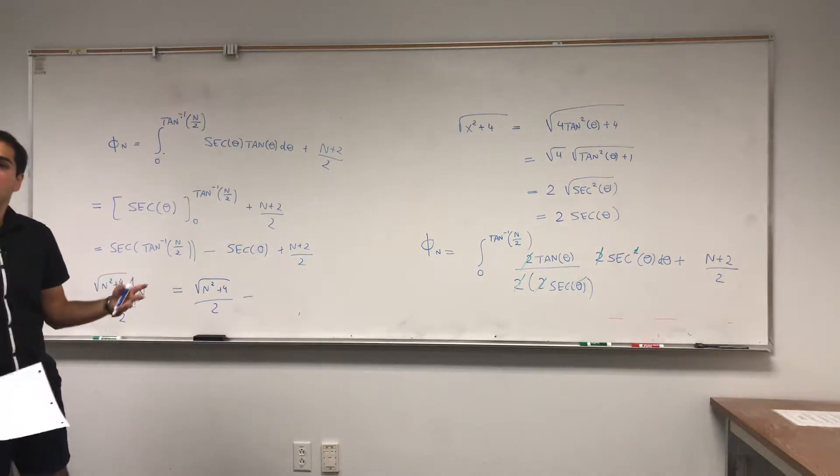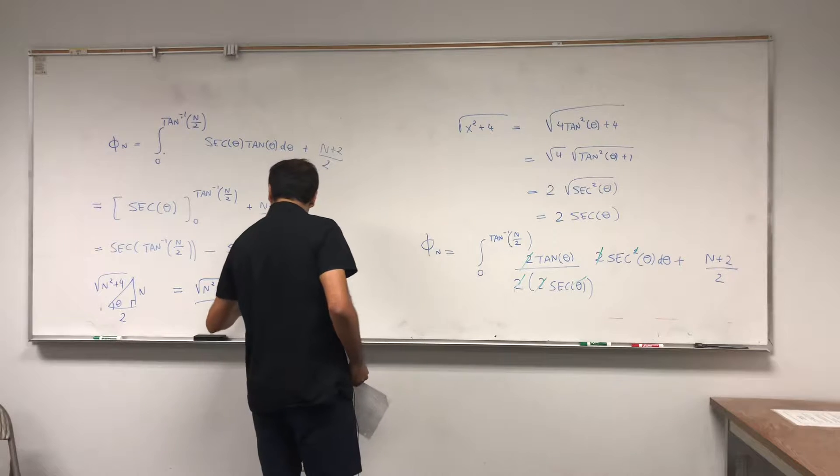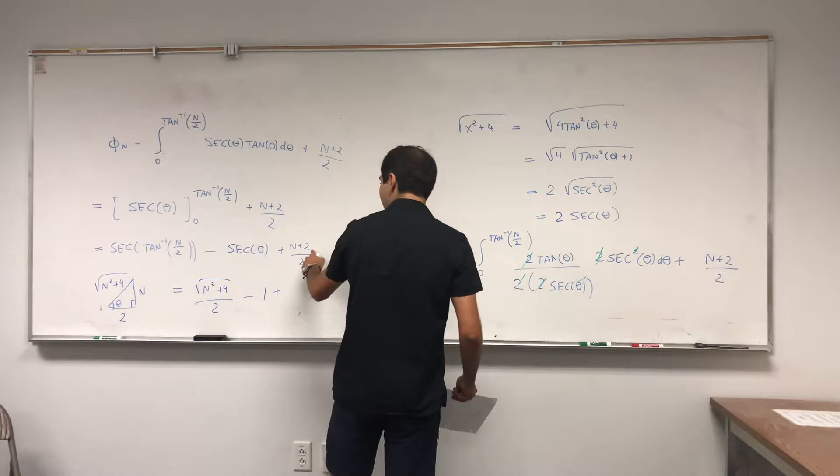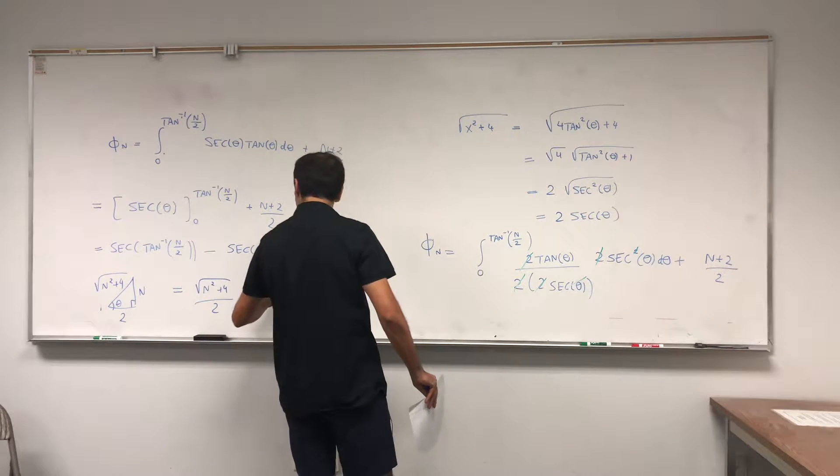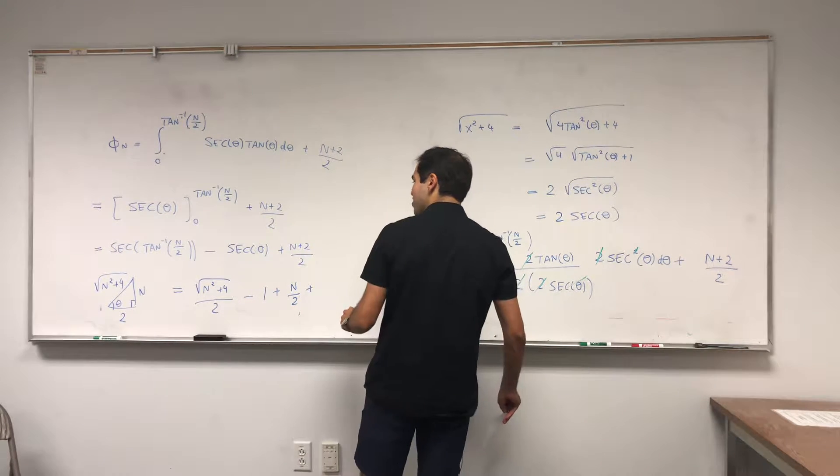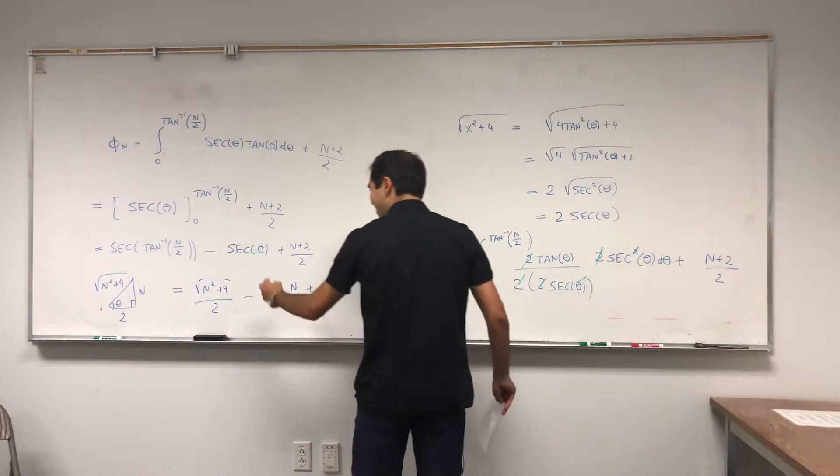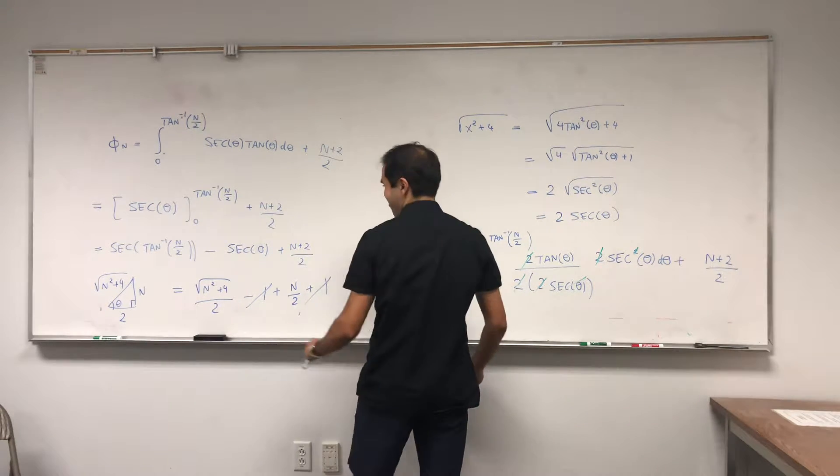Secant of 0 is 1 over cosine of 0 which is 1 over 1 which is 1. And this one now split it up to get a simplification. That's n over 2 plus n over 2 plus 2 over 2. 2 over 2 is 1, and wow we get this nice simplification.